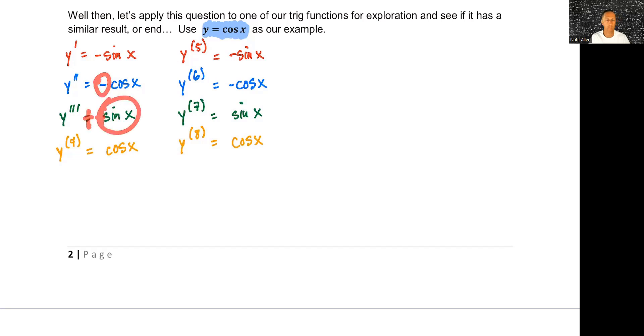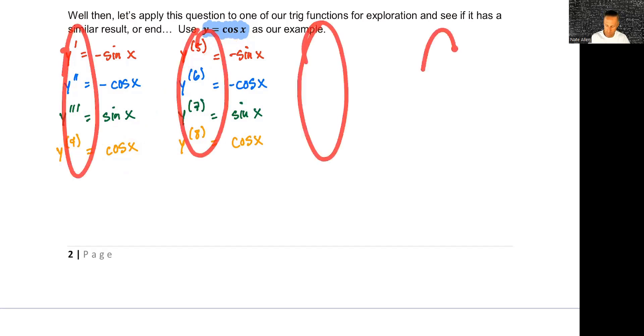The derivative of that, which is cosine, is negative sine, but because I have a negative out in front already, the double negative would have cancelled and gotten back to the positive sine. And we know the derivative of that is cosine, and remember that's where we started. So you can see every four derivatives this thing is what is called cyclical. It goes in this cycle of repetitiveness and will continue to do so indefinitely.